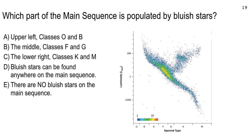Here's your distribution. A lot of you voted for A and a lot for D. The correct answer is upper left — now we're talking main sequence. So that means that diagonal. There are blue stars on the HR diagram — the white dwarfs are also blue down there — but on the main sequence, blue stars are in the upper left.